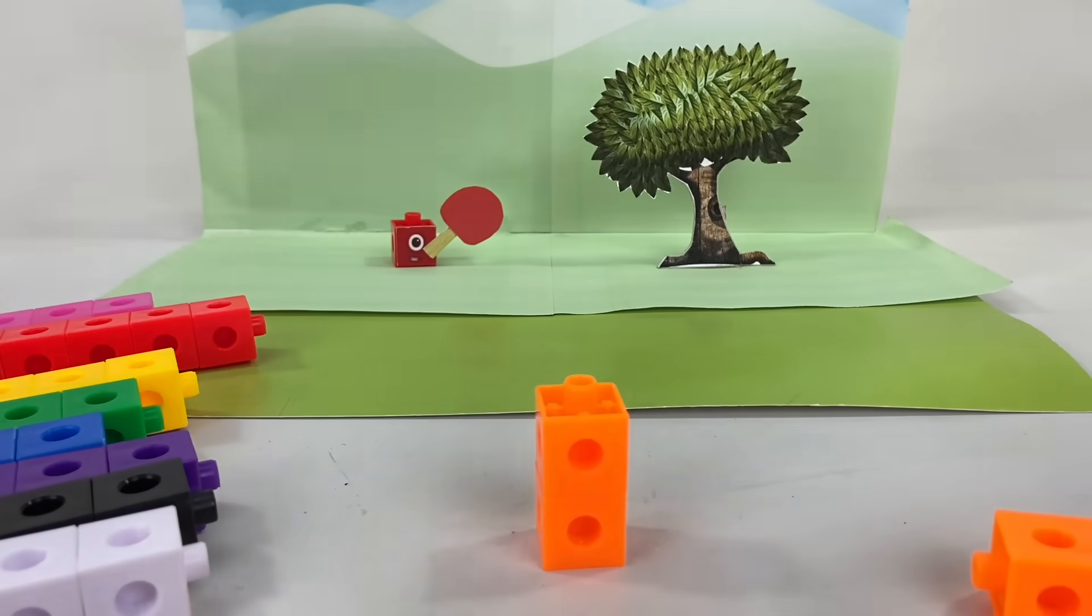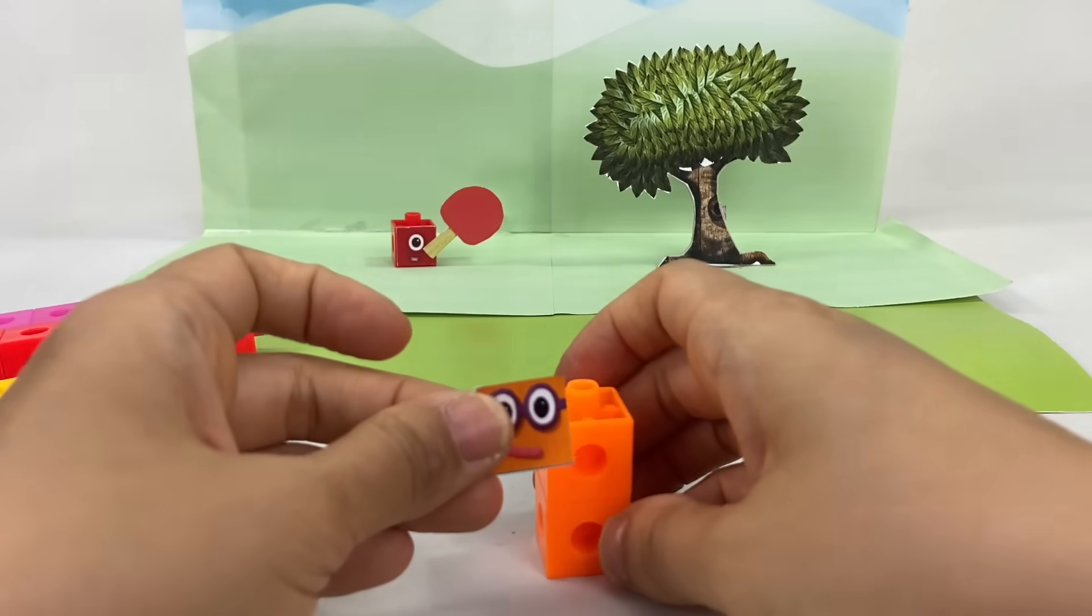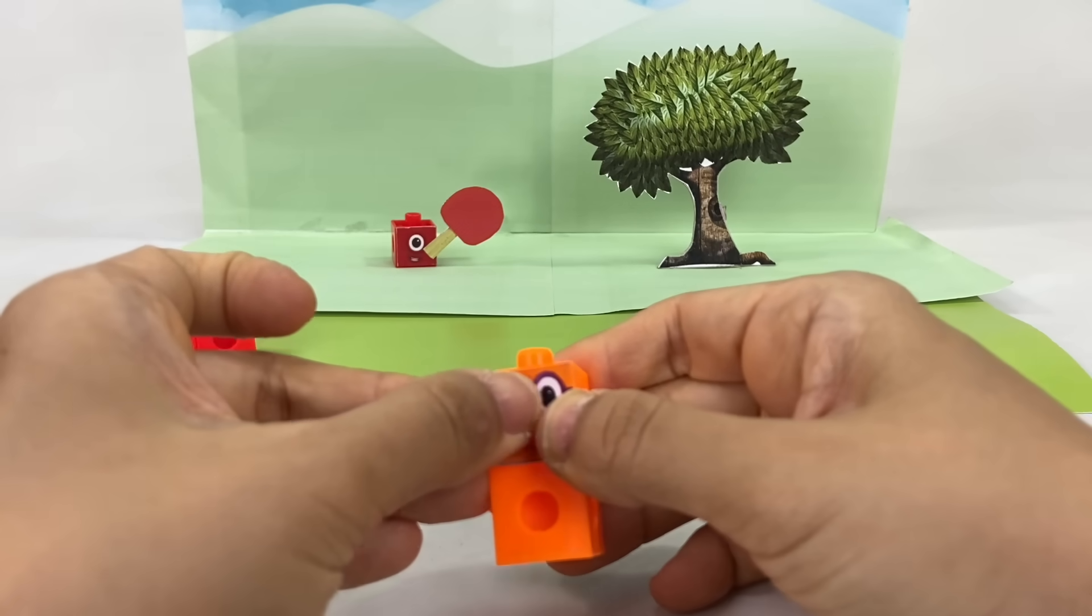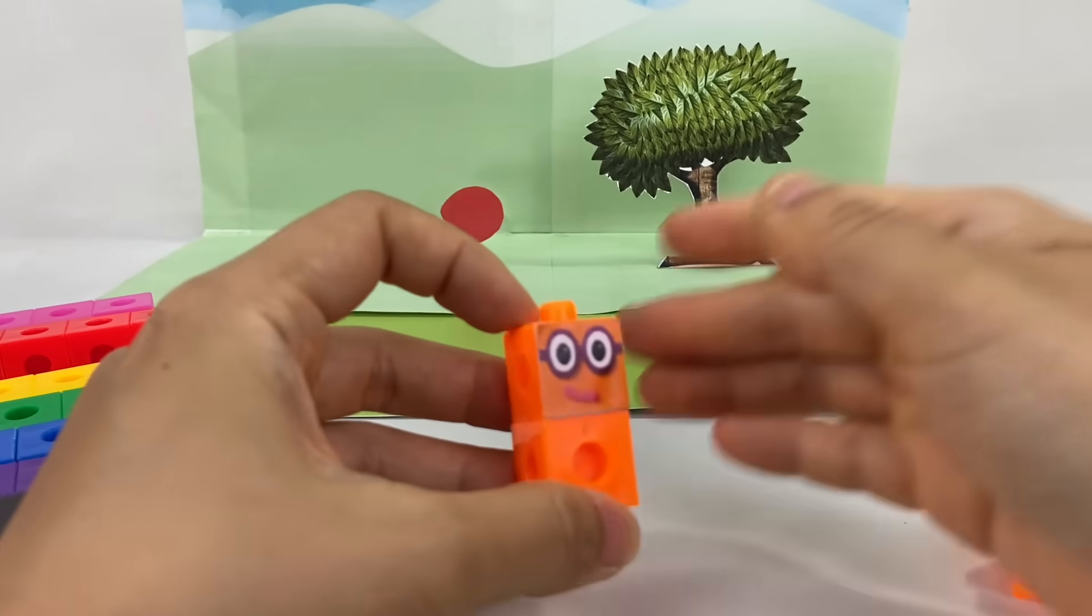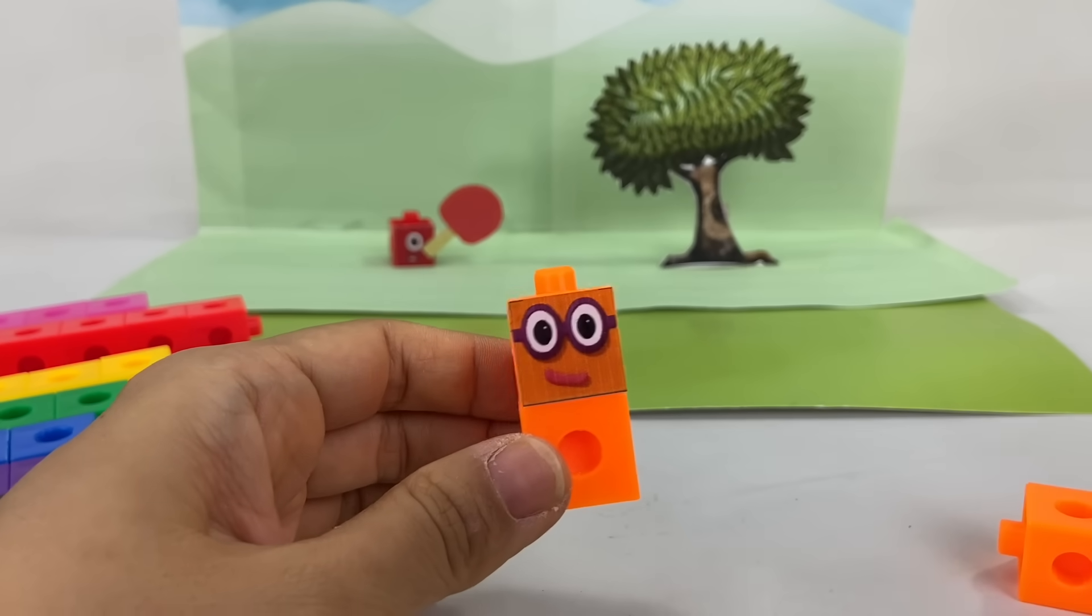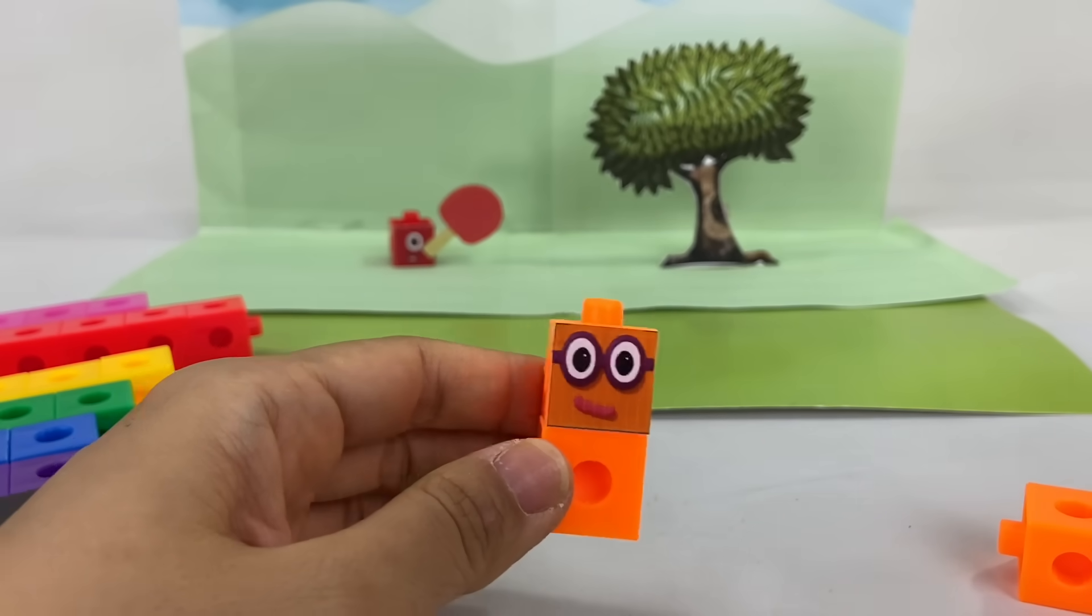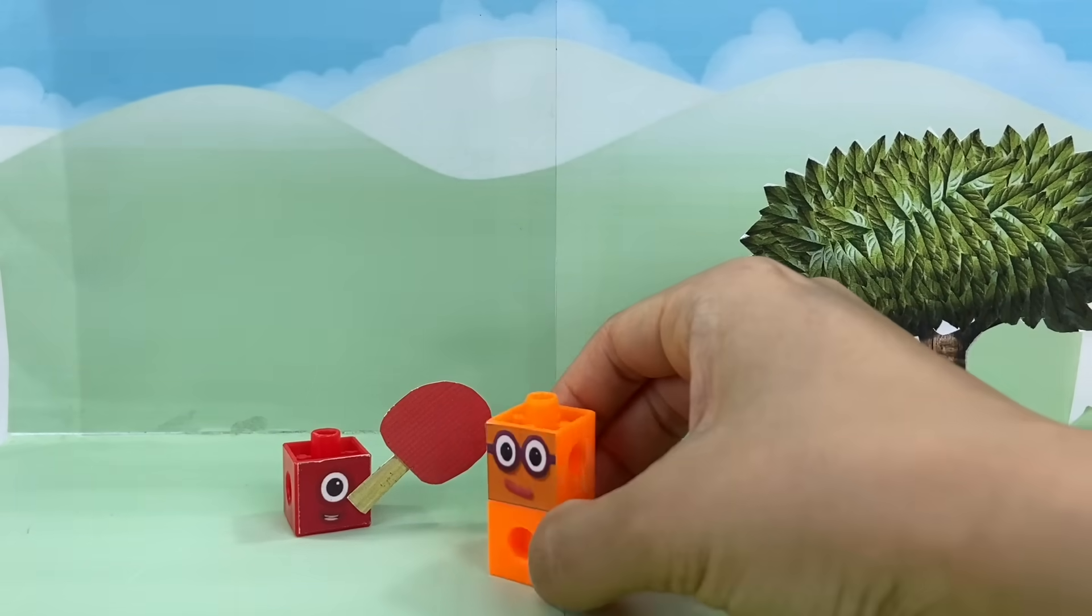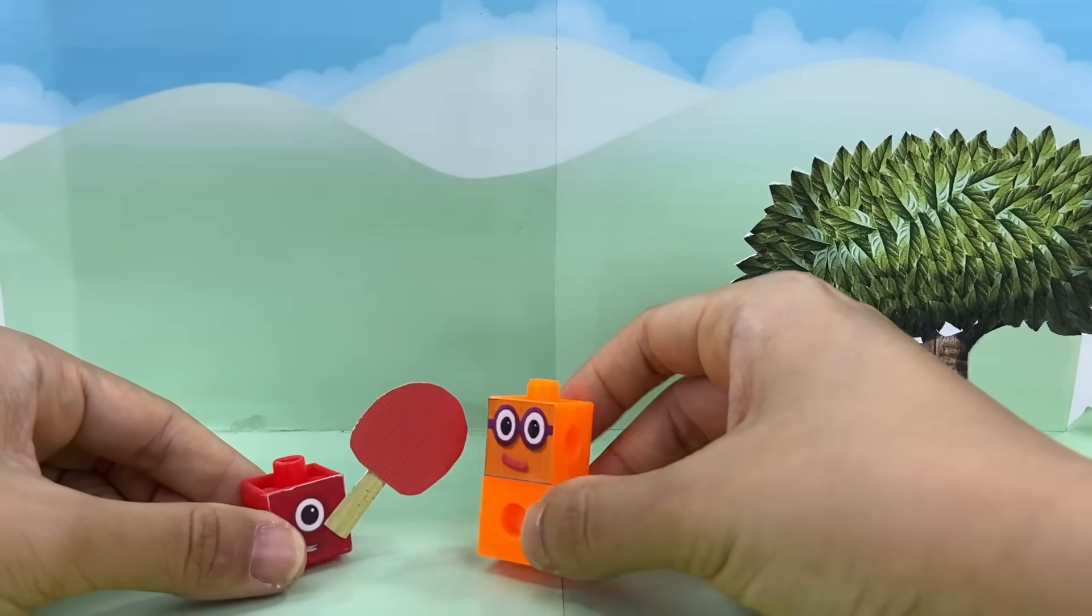Do you know who it is? That's right! Numberblock 2! He's made up of two orange blocks and you can recognize him by his pair of glasses, because he loves everything that come in pairs! Two! I am two! How do you do? I can play with you! Yay!